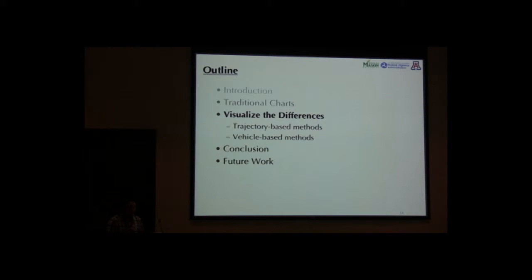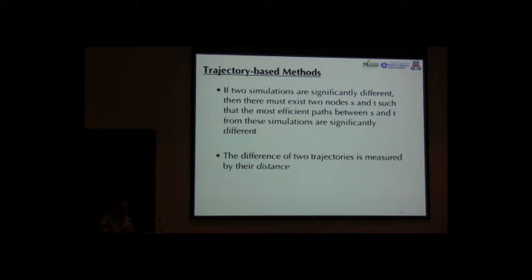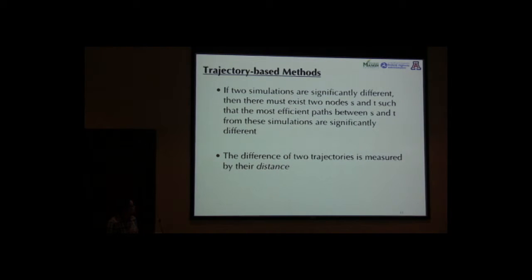The challenge is that traditional plots cannot tell us much about where or how the differences are, even when put side by side. So we used two approaches to visualize and identify these differences: one is the structure-based method and the other is the vehicle-based method. For the structure-based method: if two simulations are significantly different, there must exist two nodes S and T such that the most efficient path between S and T from these simulations are significantly different. The difference between two trajectory paths is measured by their distance.